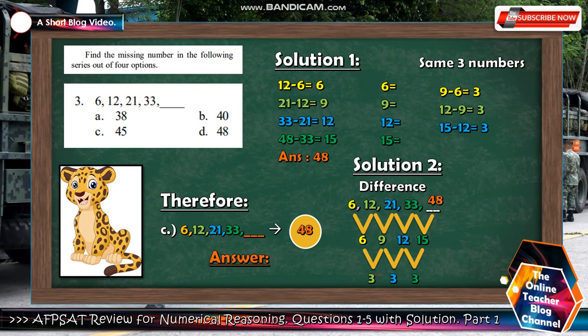I made another 2 solutions here for you to be able to understand and for those beginners who is not really love the math, this is the time for you guys to understand this. So this is very simple. 12 minus 6 is 6, 21 minus 12 is 9, 33 minus 21 is 12, 48 minus 33 is 15. So the answer is 48. The differences are 6, 9, 12, and 15. If we subtract it, we have 9 minus 6 is 3, 12 minus 9 is 3, 15 minus 12 is 3. So same 3 numbers. Therefore, the answer is 48 and that is letter D.